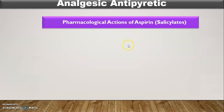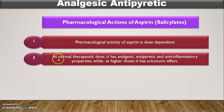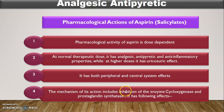Now let's see the pharmacological action of salicylates. The pharmacological activity of aspirin is dose-dependent. At a normal therapeutic dose it has analgesic, antipyretic, and anti-inflammatory properties, while at a higher dose it has a uricosuric effect. Uricosuric means these are agents responsible for promoting the excretion of uric acid. It also has both peripheral and central system effects. The mechanism of action includes inhibition of enzymes such as cyclooxygenase and prostaglandin synthetase.